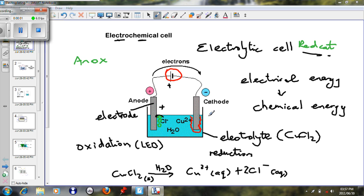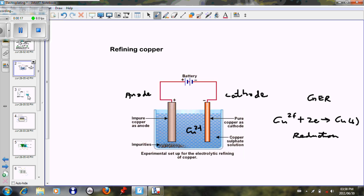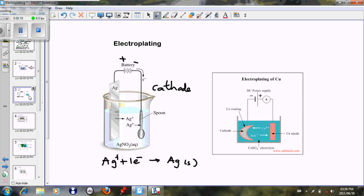Assalamualaikum warahmatullahi wabarakatuh. Today we look at the third aspect of electrochemical cells, and we are looking particularly at electrolysis. We discussed the basics of electrolytic cells, we spoke about copper refinement, and we spoke about electroplating where the substance that wants to be coated must be placed at the cathode.